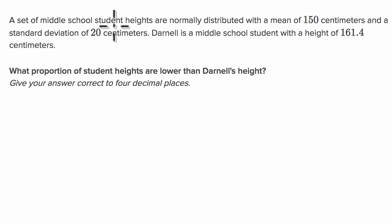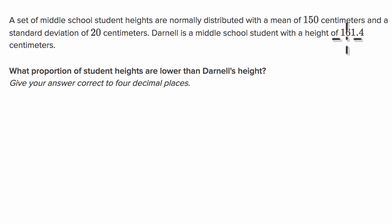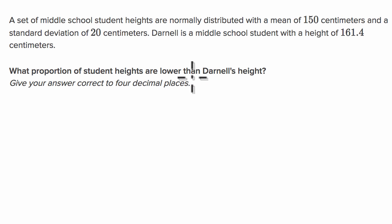A set of middle school students' heights are normally distributed with a mean of 150 centimeters and a standard deviation of 20 centimeters. Darnell is a middle school student with a height of 161.4 centimeters. What proportion of student heights are lower than Darnell's height?